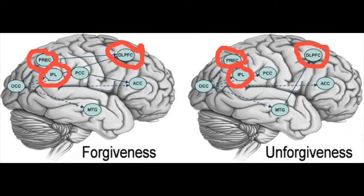In the group that didn't practice forgiveness — the unforgiveness brain — these connections were not made. Therefore, third-party perspective taking was not connected to how we decide how we feel, nor was empathy.